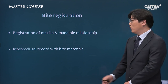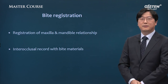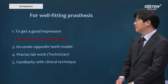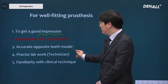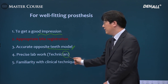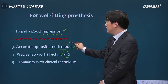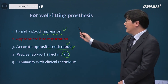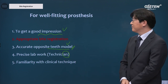Bite registration is registering the maxilla and mandible relationship using proper bite materials. For well-fitting prosthesis fabrication, we need a good impression, an accurate opposite teeth model, and skilled technician lab work. Taking a good impression is connected to the accurate opposite teeth model using appropriate bite registration, so bite registration is as important as good impression taking.